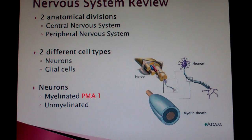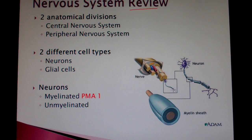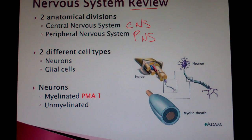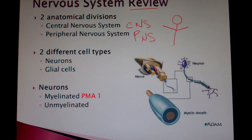The nervous system — this is a review, so stay with me. You have the central nervous system, or CNS, and the peripheral nervous system, the PNS — that's all you have. The anatomical divisions: the central nervous system is basically the spine and skull — the brain. The peripheral nervous system is everything else, including the limbs and the legs. Pretty straightforward.